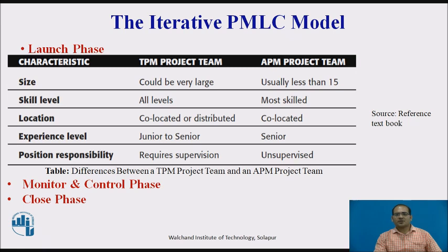There is a significant difference between the project team for traditional project management and for agile project management. In terms of size, traditional teams could be very large, while agile teams are usually less than 15. Skill level is all levels in traditional, but mostly skilled people in agile. Location is co-located or distributed in traditional, but co-located in agile. Experience level in traditional ranges from junior to senior, while in agile it is skilled and senior people. Traditional teams require a supervisor to control the team, whereas agile project management teams are unsupervised.